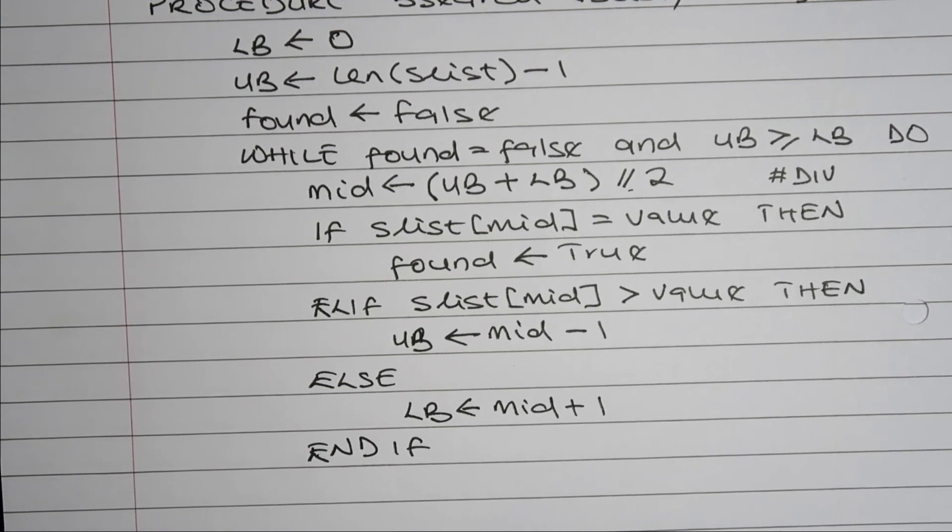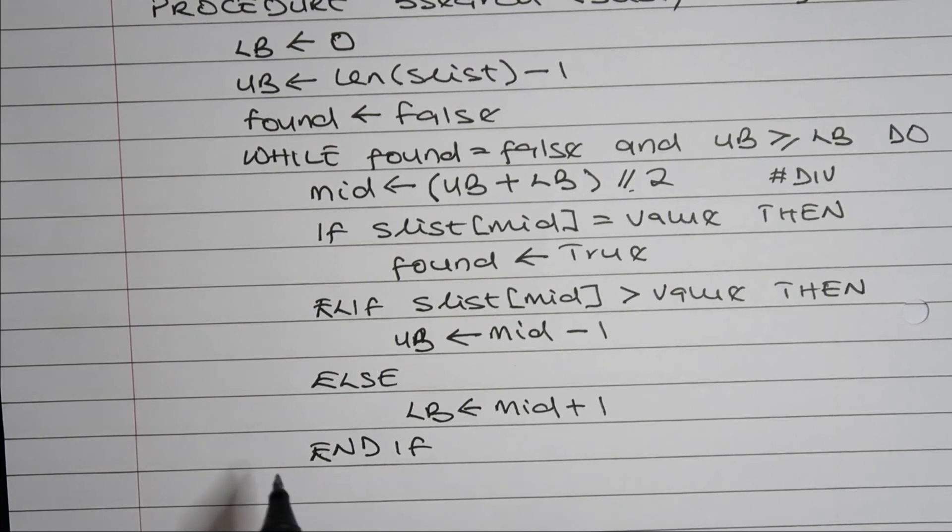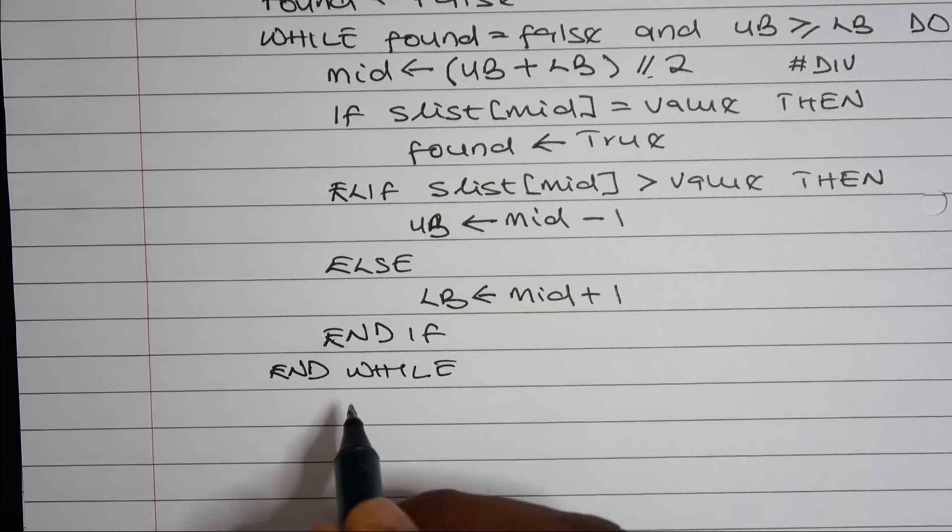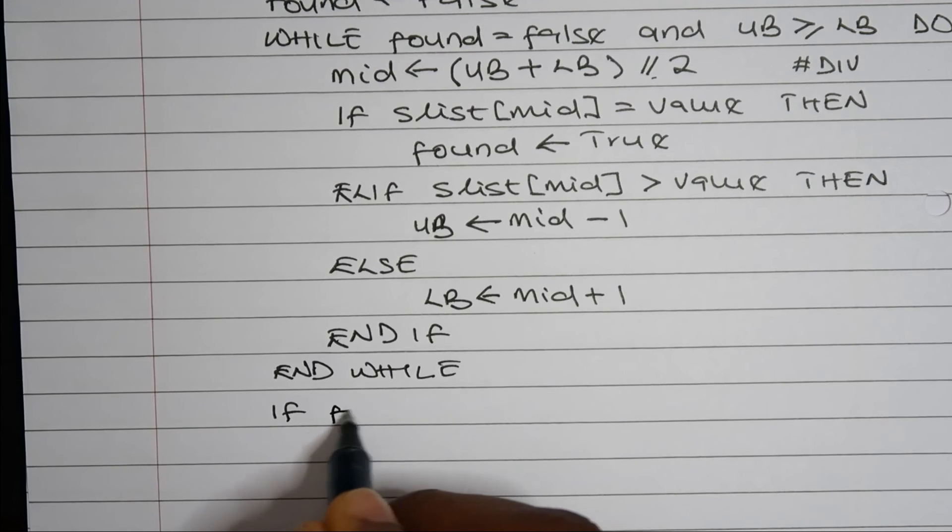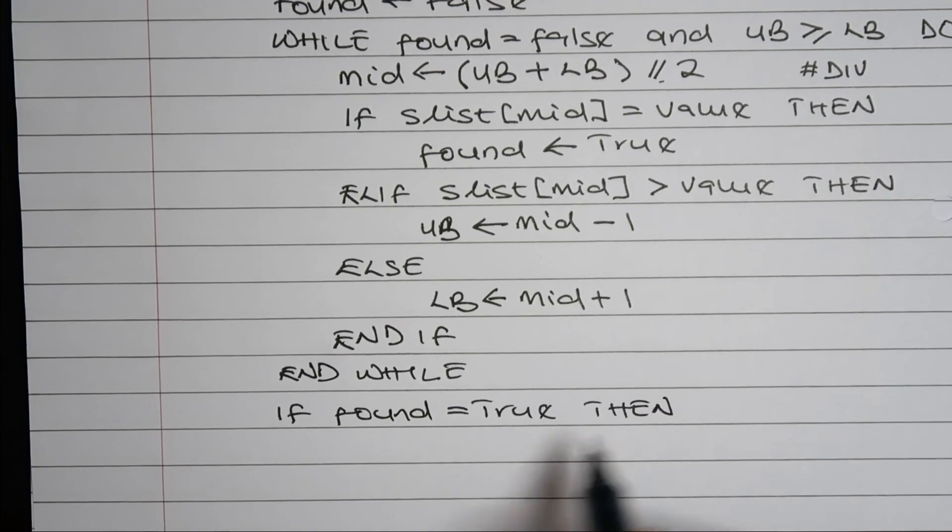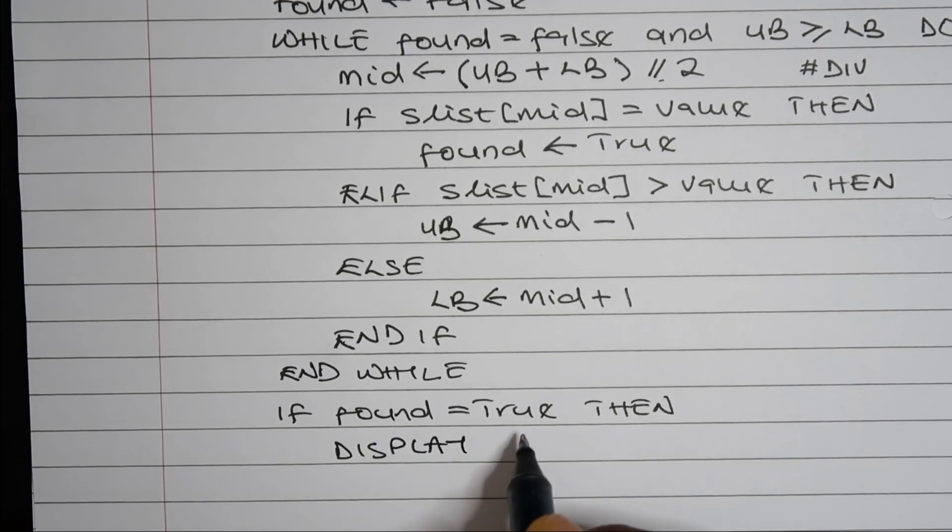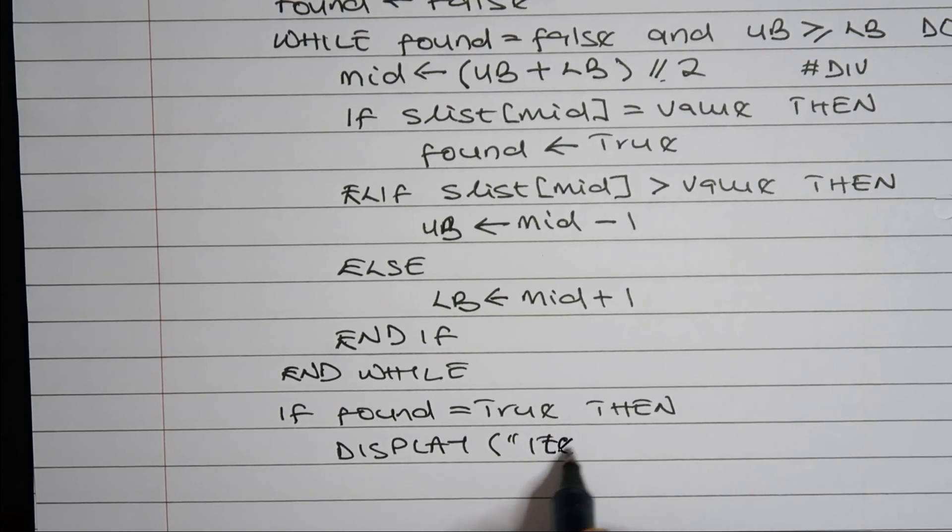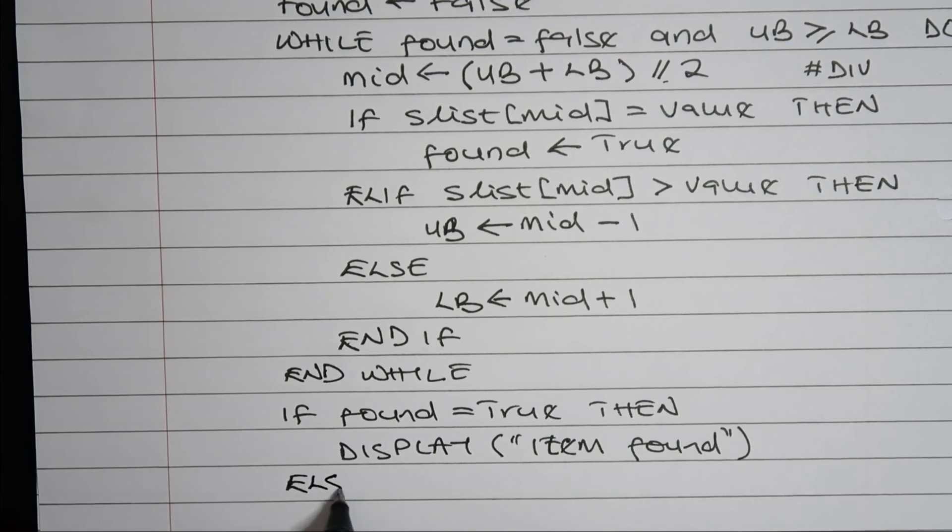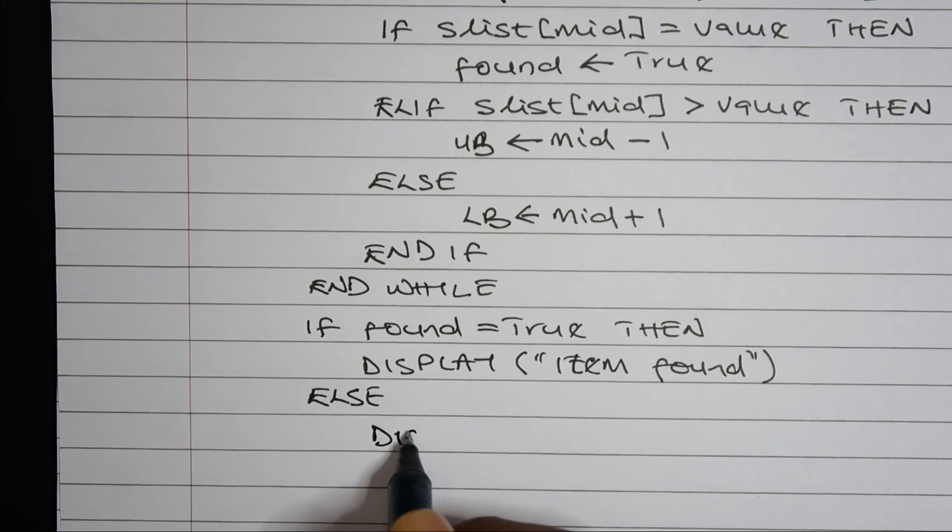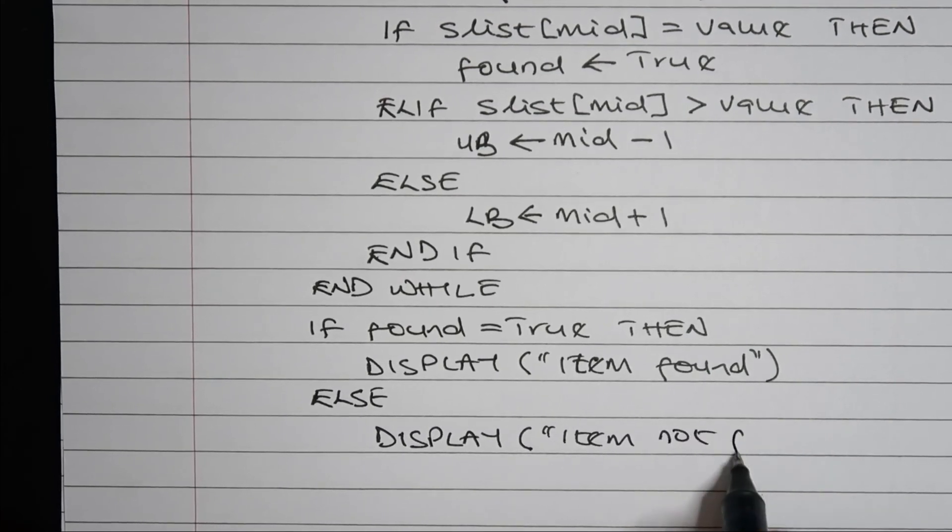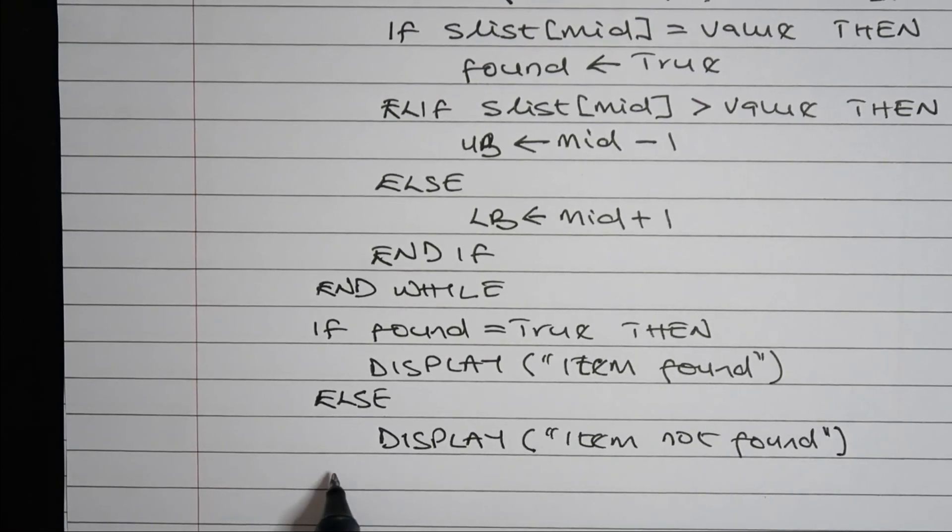If say for example, the question in the exam you're asked to write says, I'll end while first. So if you're asked to then print if the item has been found or not, we can say that if found equals true, then we'll display item found. Otherwise, we'll display item not found. And we can end if here.